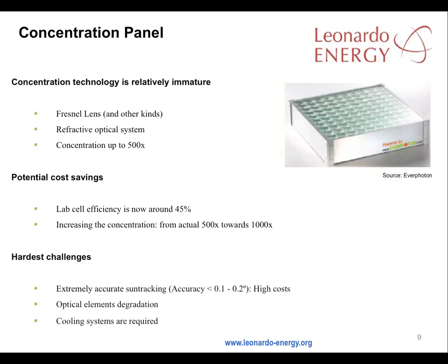A number of light concentrating technologies have been developed to improve the efficiency of PV cells. These include Fresnel lenses and refractive optical systems. They can offer light concentrations of 500 magnitude, with newer technologies aiming for around 1000 magnitude. This kind of light concentration can deliver improvements in cell efficiency.